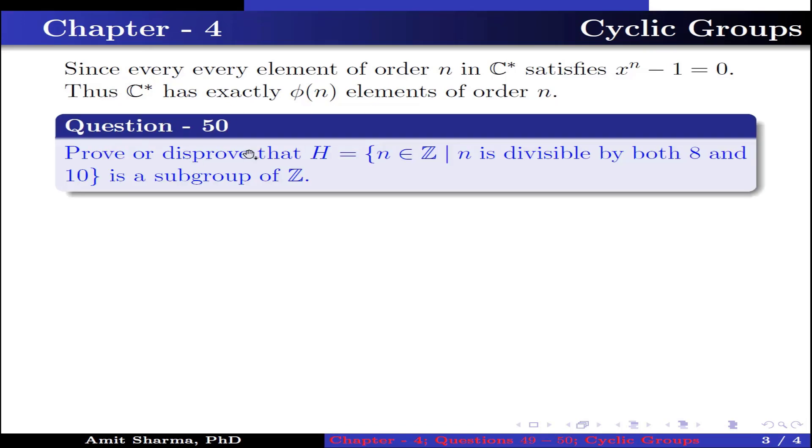Question number 50. Prove or disprove that H = {n ∈ Z | n is divisible by both 8 and 10} is a subgroup of Z.